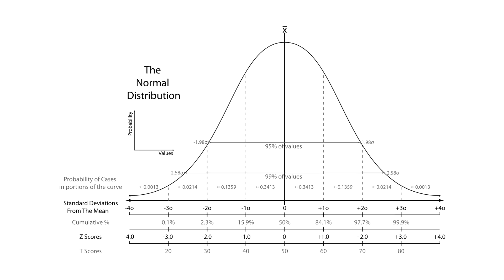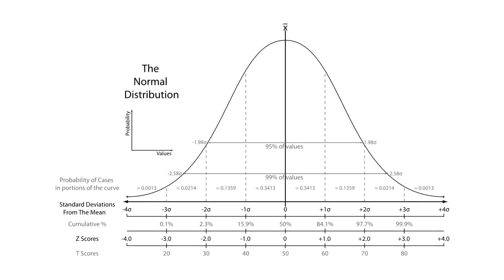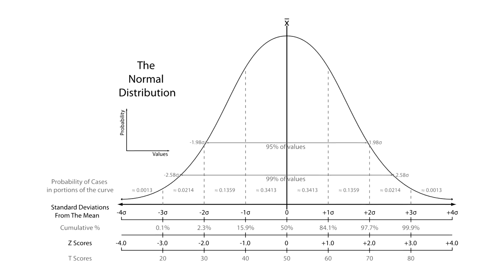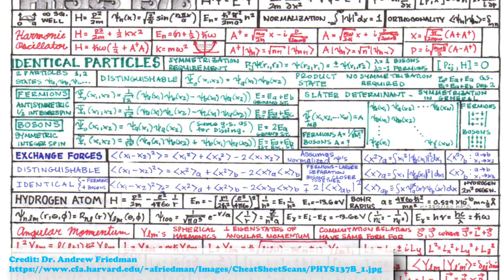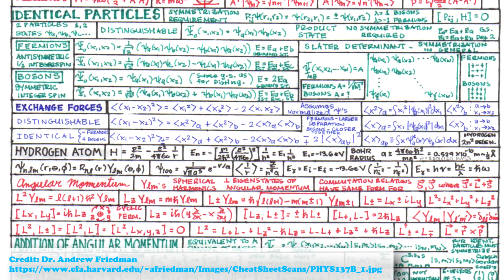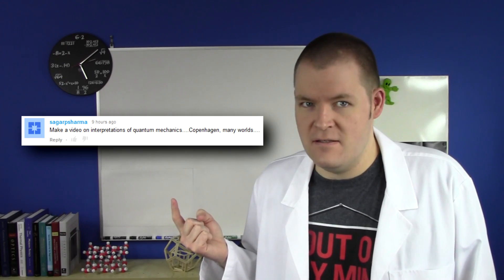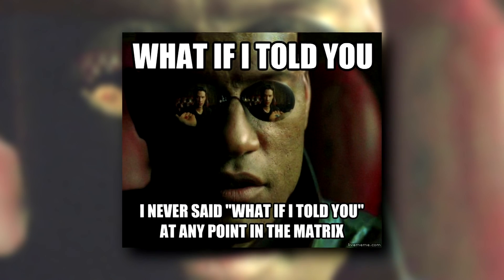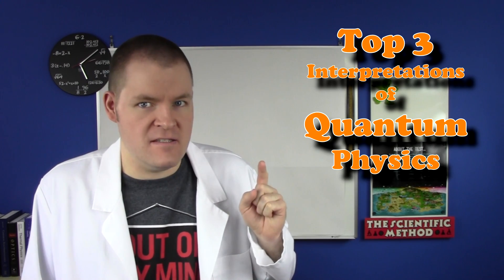But what does it all mean? Everyone agrees with the math. It's kind of hard to argue with because it works. The problem is, it's probability and statistics — a type of math only applied when the situation is too complicated to apply any other. Sagar Sharma was wondering about interpretations. This is really where the science is, and frankly, a lot of people have put in their two cents. Let's see how deep the rabbit hole goes. This is the top three interpretations of quantum physics.